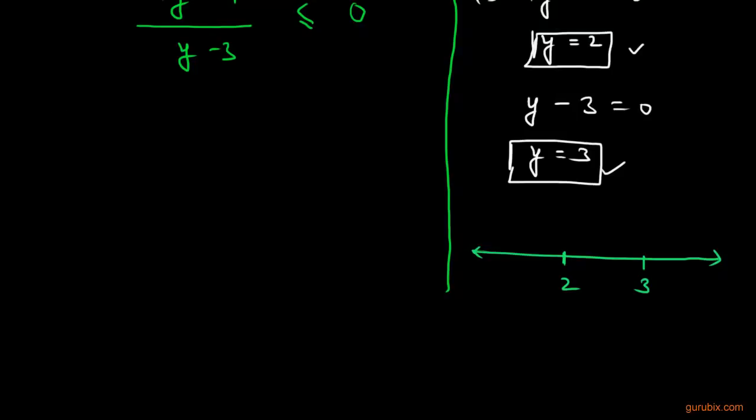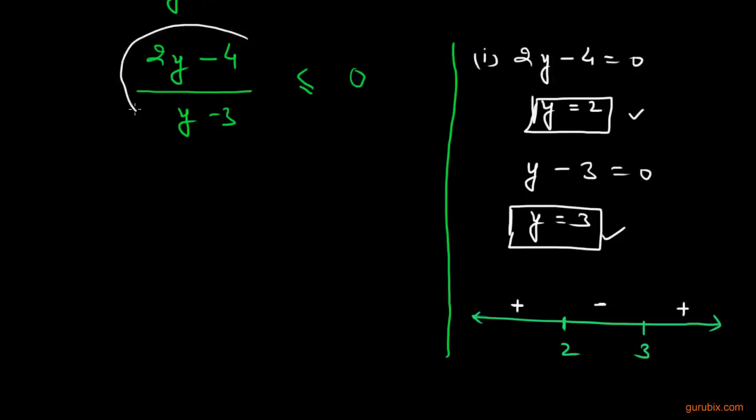Now we shall place positive sign here, negative here, and positive sign here. Since this whole value is negative, so this region will be the solution of this inequality. Then y will belong to [2, 3), and 3 is not included.